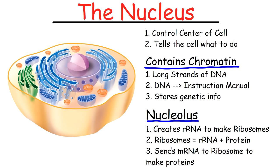Inside of the nucleus, we have this ball right here, and that is the nucleolus. The nucleolus creates ribosomal RNA to make ribosomes. And ribosomes — you can see these little spheres floating in the cytosol — they make proteins. The ribosomes consist of ribosomal RNA and proteins, but their job is to manufacture proteins.